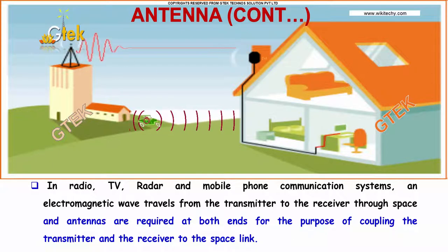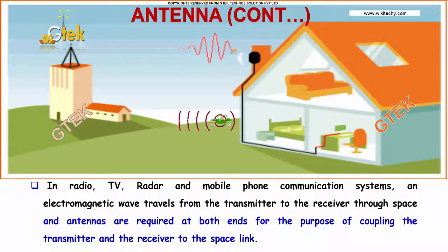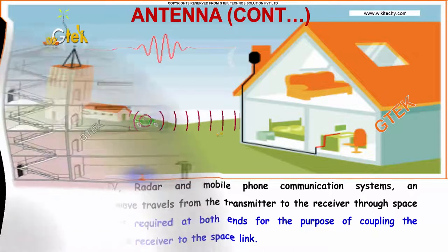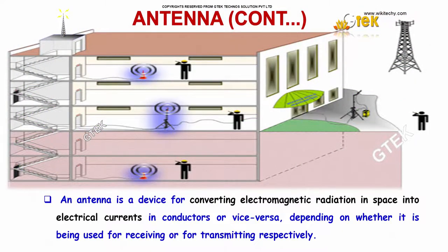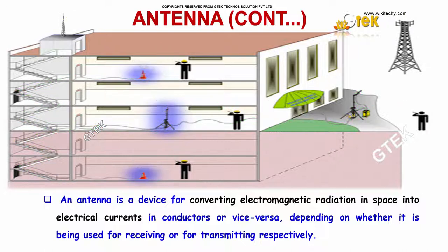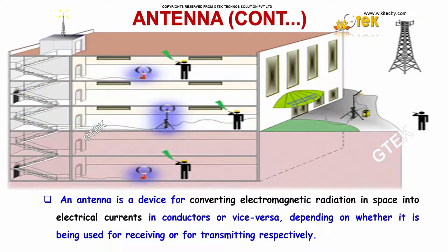Antennas are required at both ends for the purpose of coupling the transmitter and the receiver to the space link. An antenna is a device for converting electromagnetic radiation in space into electrical currents in conductors, or vice versa, depending on whether it is being used for transmitting or receiving. You are able to see the electromagnetic waves passed here.